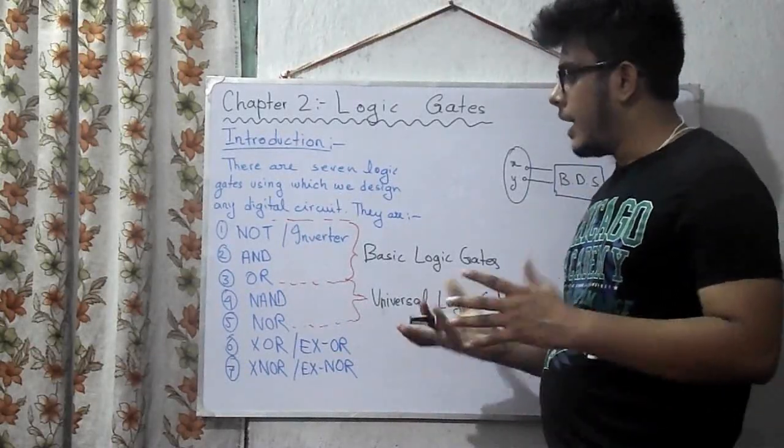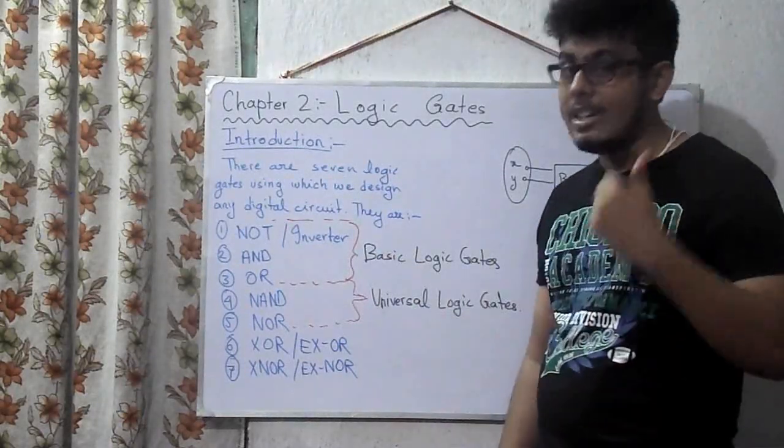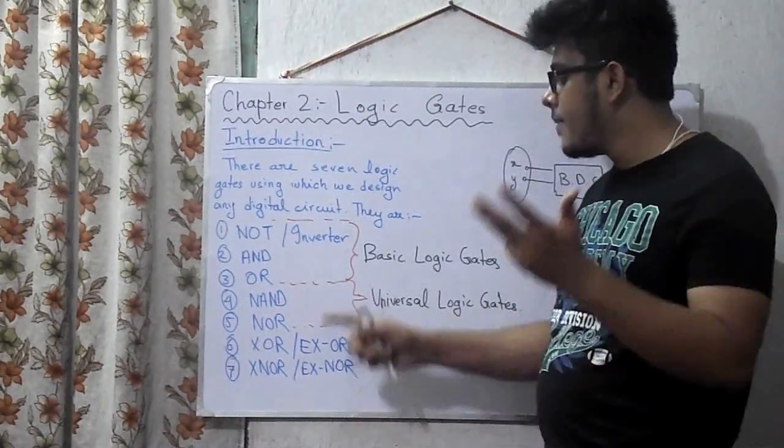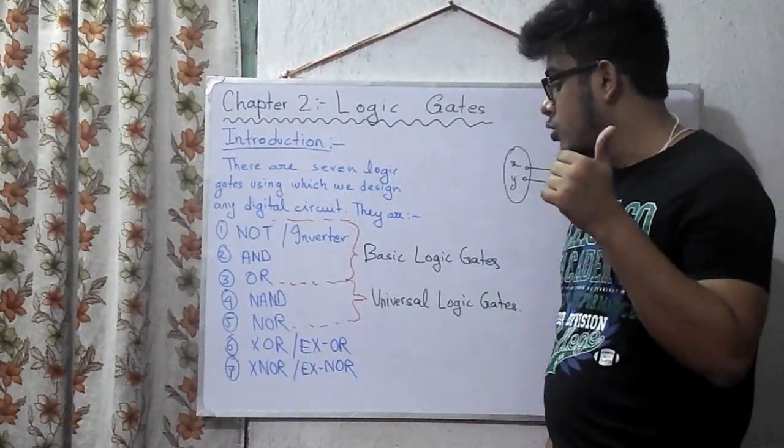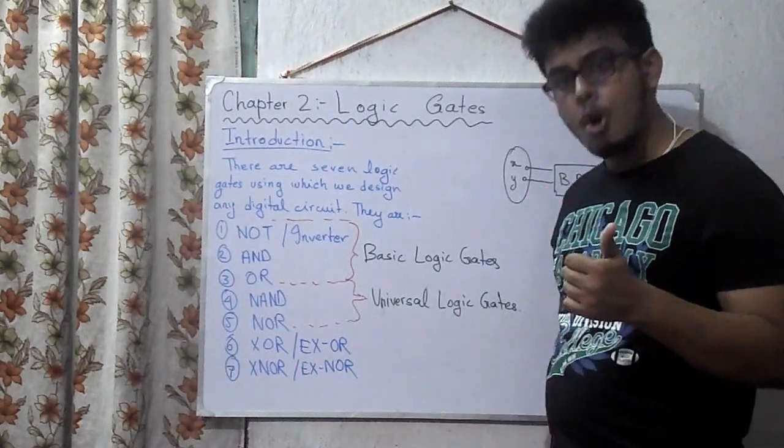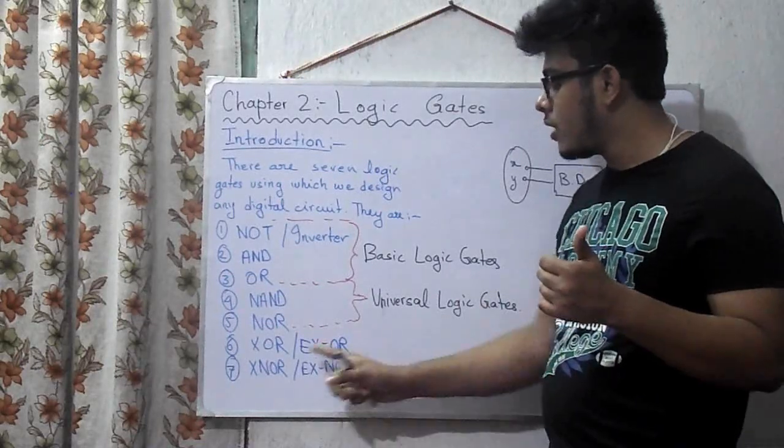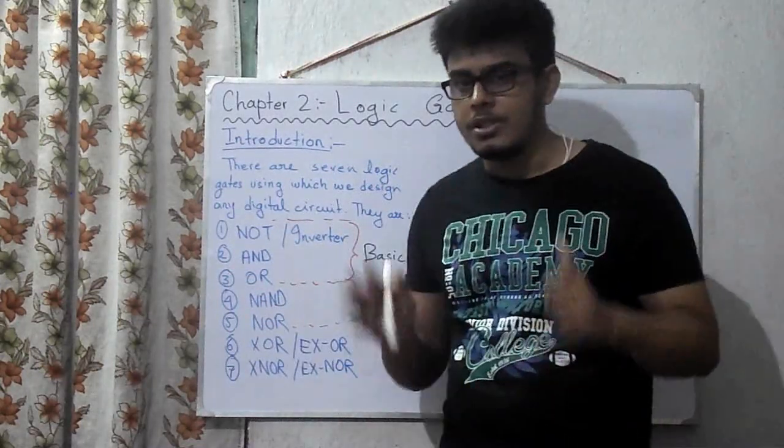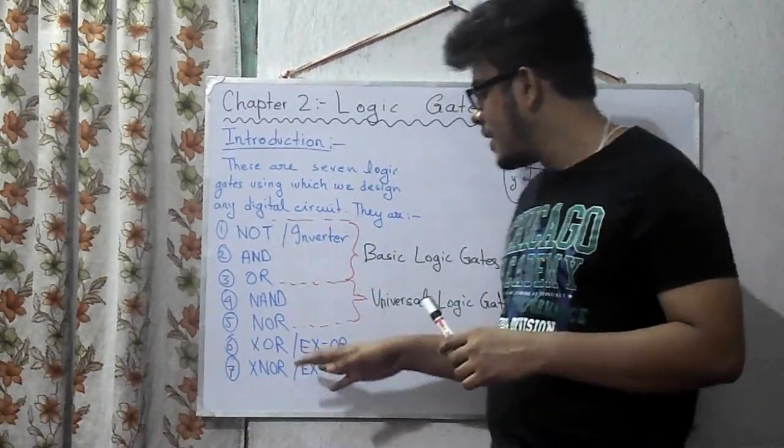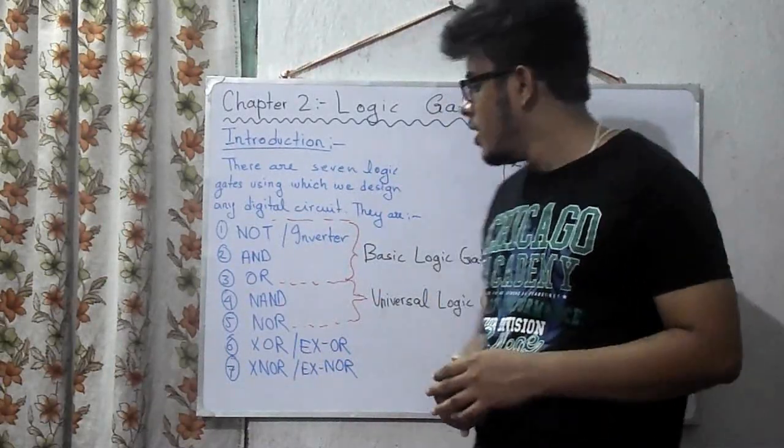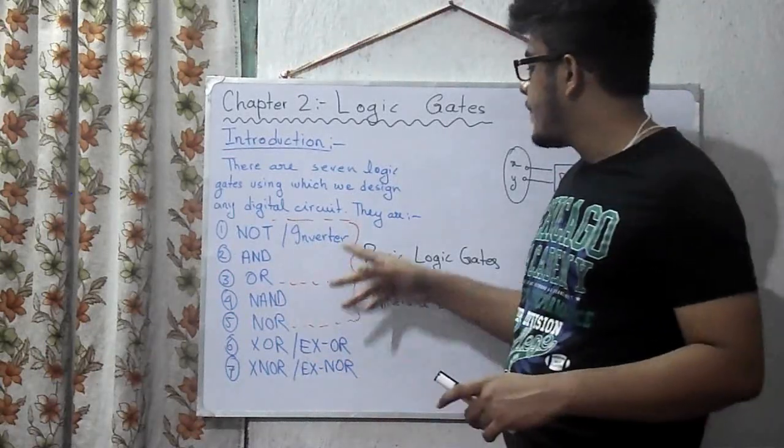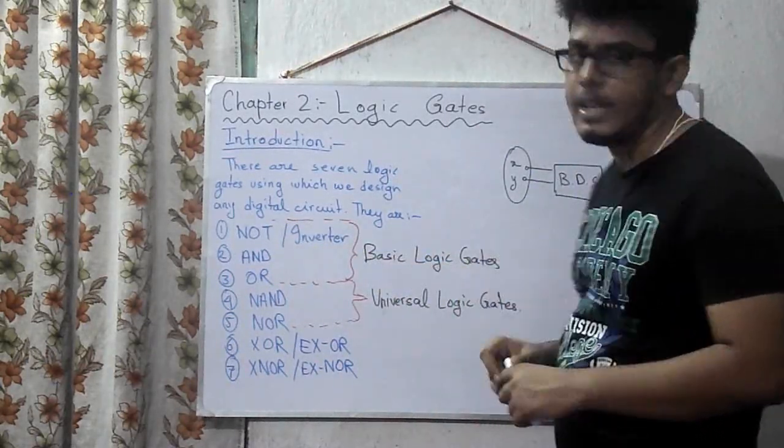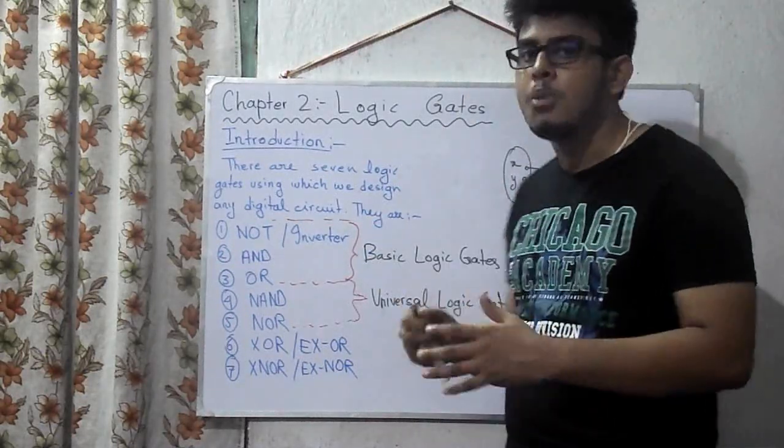They are: the NOT or inverter, the AND gate, the OR gate, the NAND gate, the NOR gate, the XOR gate (exclusive OR), and the XNOR gate (exclusive NOR). These three - NOT gate, AND gate, OR gate - are the basic logic gates. These are the building blocks.